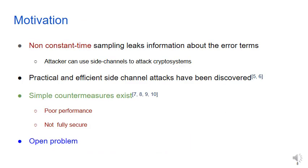Currently, almost all the discrete Gaussian samplers run in non-constant or variable time. This, in fact, leaks some information about the error terms. Attackers can use side channels to exploit this leaked information to attack the crypto system. There are, in fact, very efficient and practical side channel attacks on lattice-based signature schemes that exploit this vulnerability of discrete Gaussian samplers.